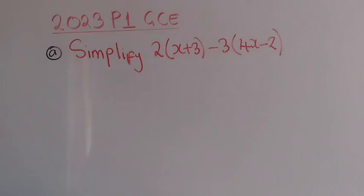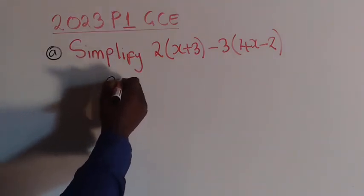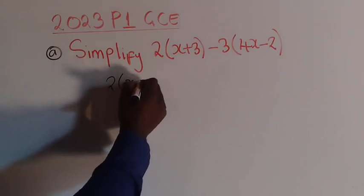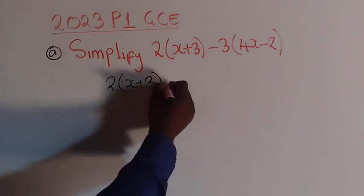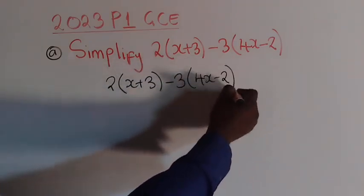So question A, simplify 2(x+3) - 3(4x-2). In order for us to be able to simplify this question, we need first to write the question the way it is. So I write 2(x+3) minus 3, then 4x minus 2.